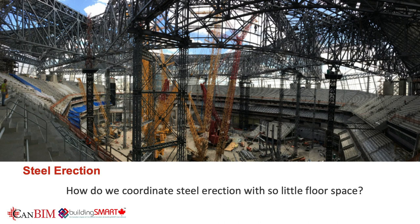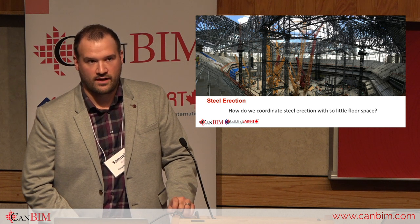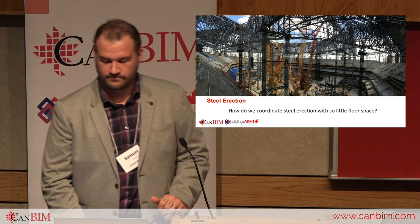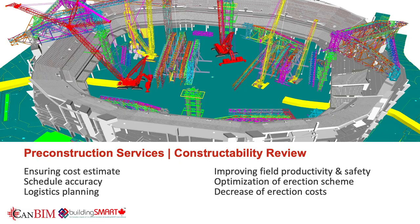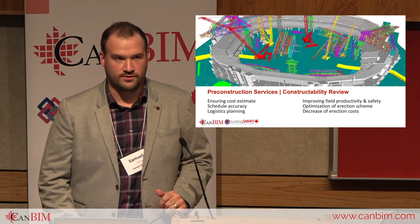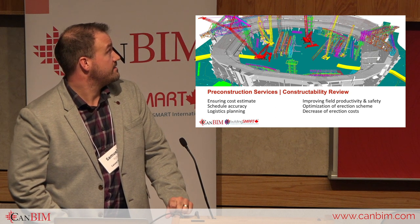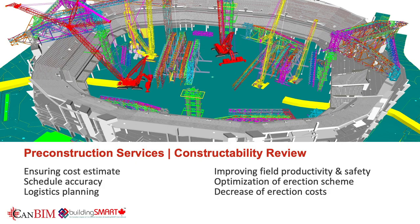Moving to our next example: how do you coordinate the steel erection with so little floor space? Can-Am has built over 50 major stadiums, and this is always a complex problem. Where do you lay down the steel? Where do you pre-assemble your parts? And how do you circulate with multiple cranes when the roof is closing in? The Falcon Stadium was our first experience with constructability review in a 3D environment — it is now part of the service we offer. The image here is a Navisworks model using Crane E-Max crane models. Working with the steel erector, we were able to review the steel erection at different sequences, making construction more predictable and easier to plan. Advantages include ensuring cost estimates, schedule accuracy, logistics planning, improving field productivity and safety, optimizing erection schemes, and decreasing erection costs.